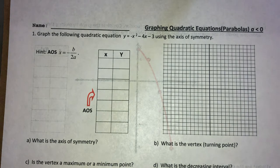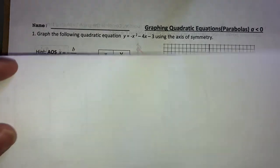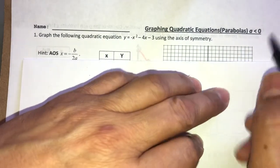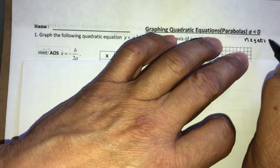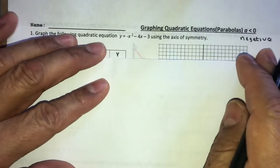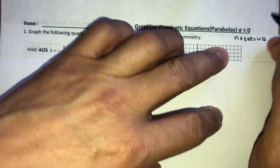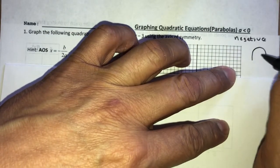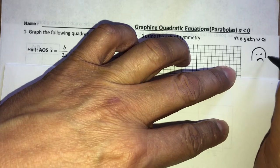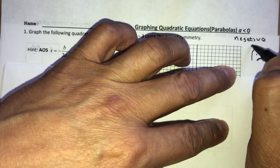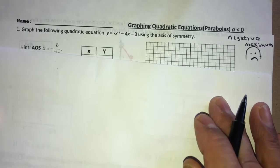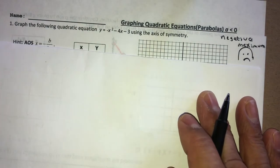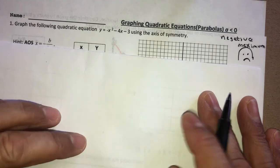We're going to graph parabolas when the value of A is less than one, meaning the value of A is going to be negative. When A is negative, the parabola is going to be a sad face, and that means it is going to be a maximum. The homework for today was supposed to be happy faces, which means a minimum.